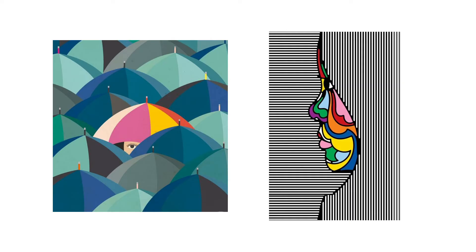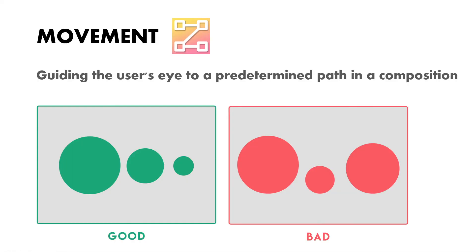Examples of emphasis include changing the color of an umbrella or a face to highlight it, while all others remain in a similar neutral manner. Similarly, the background or negative space can make a subject stand out, highlighting or emphasizing the key element.